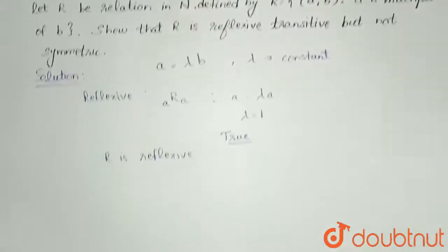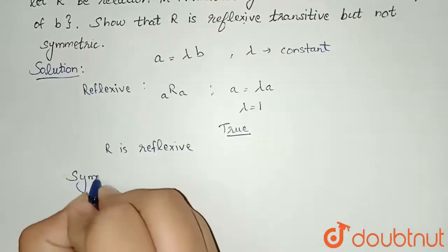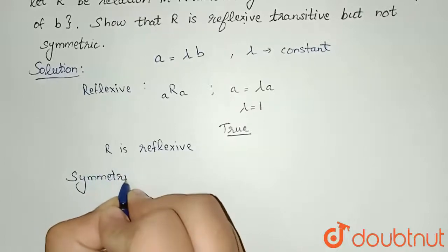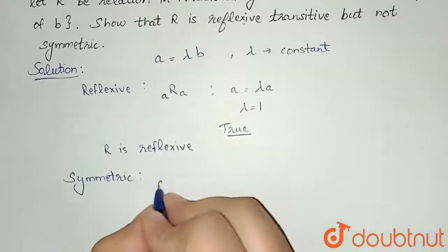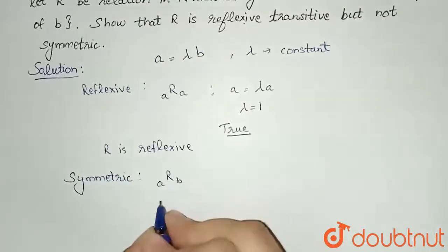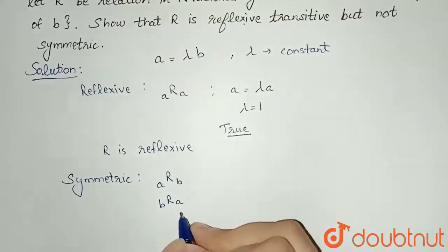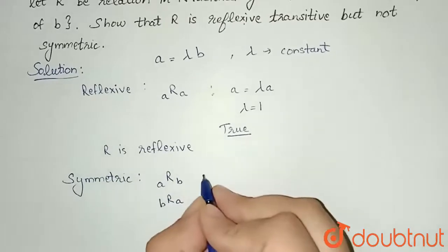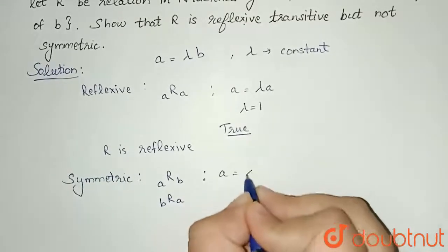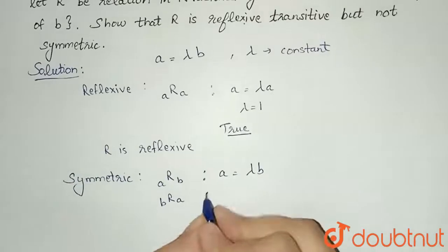Now we will check for the symmetric property. While checking for the symmetric property, we check two conditions: if an element a is related to b, then b should be related to a, that is the opposite should also be true. So if a is related to b, that means a equals lambda times b.